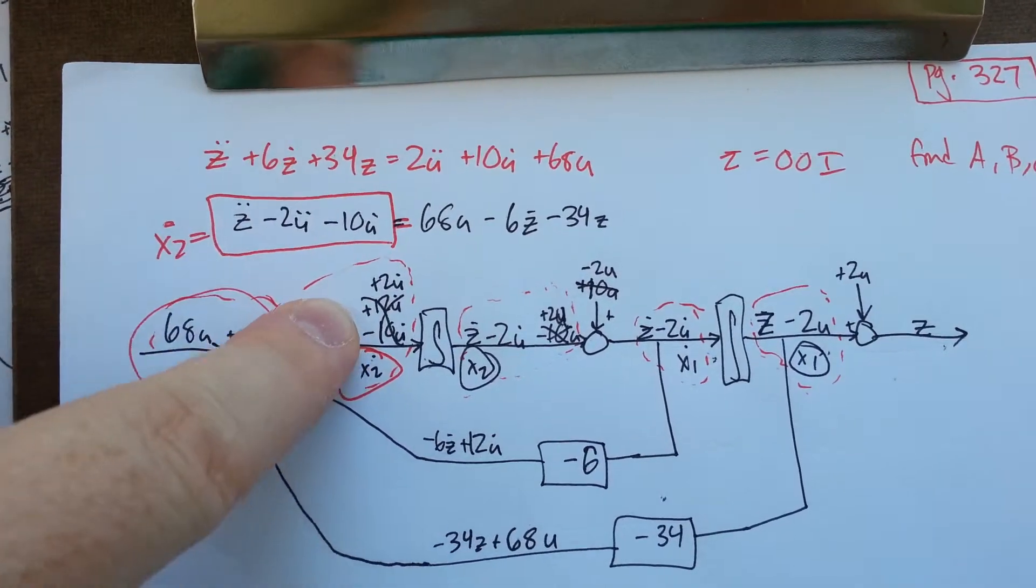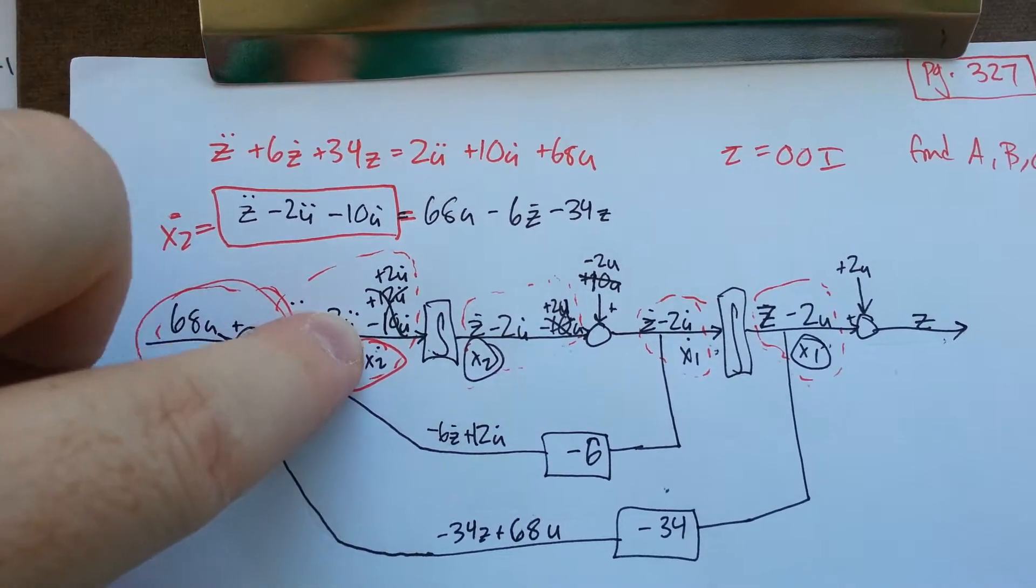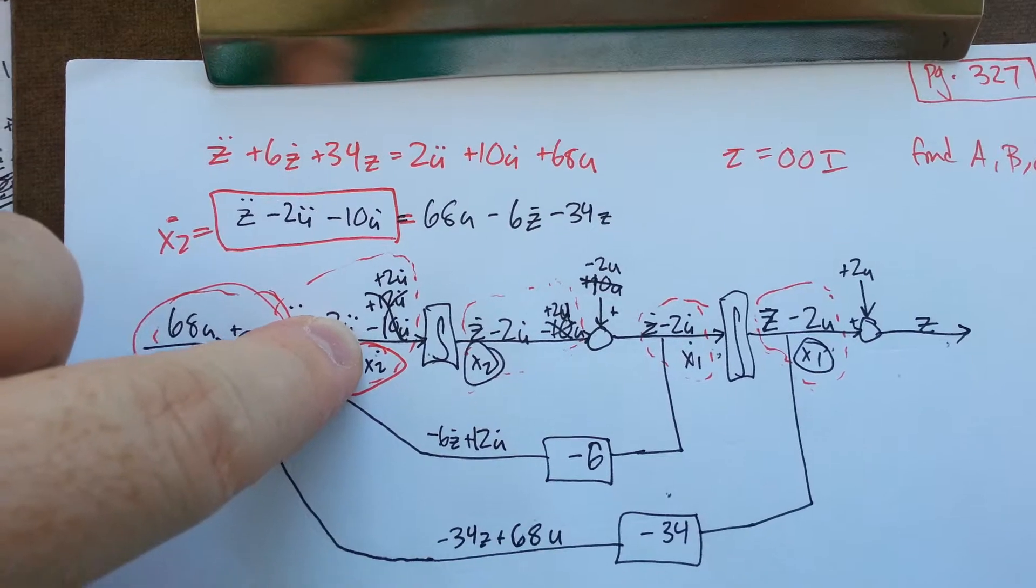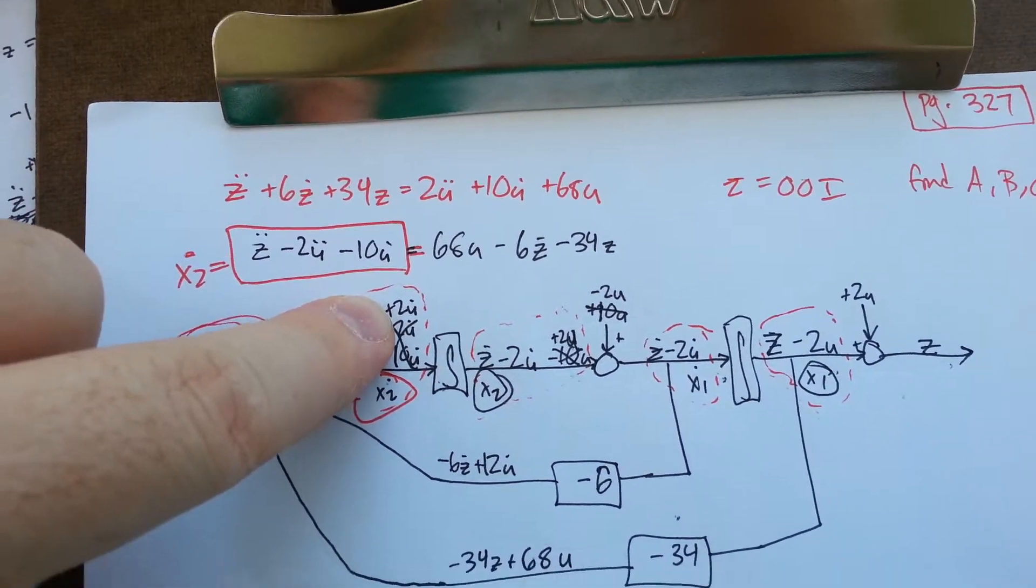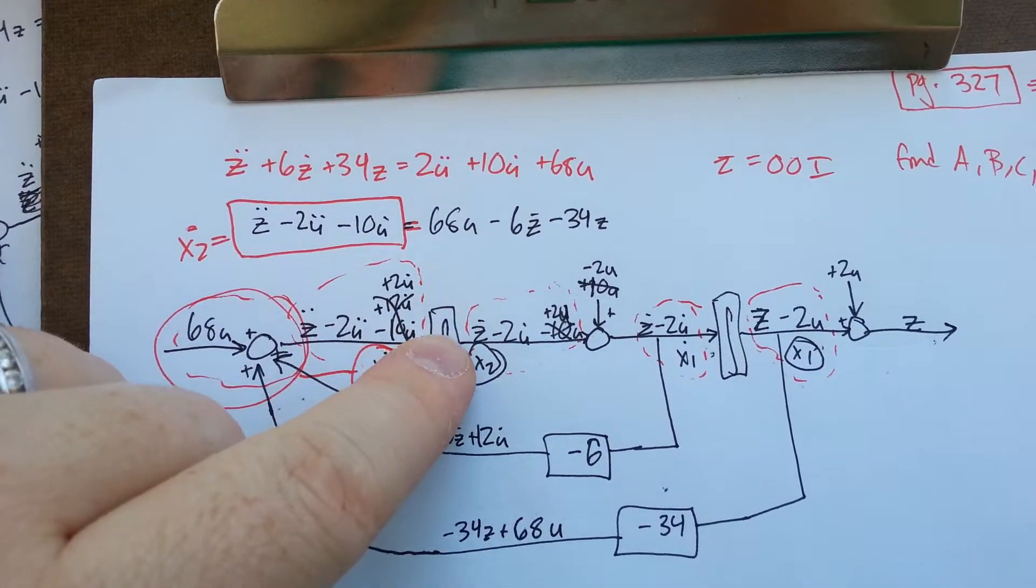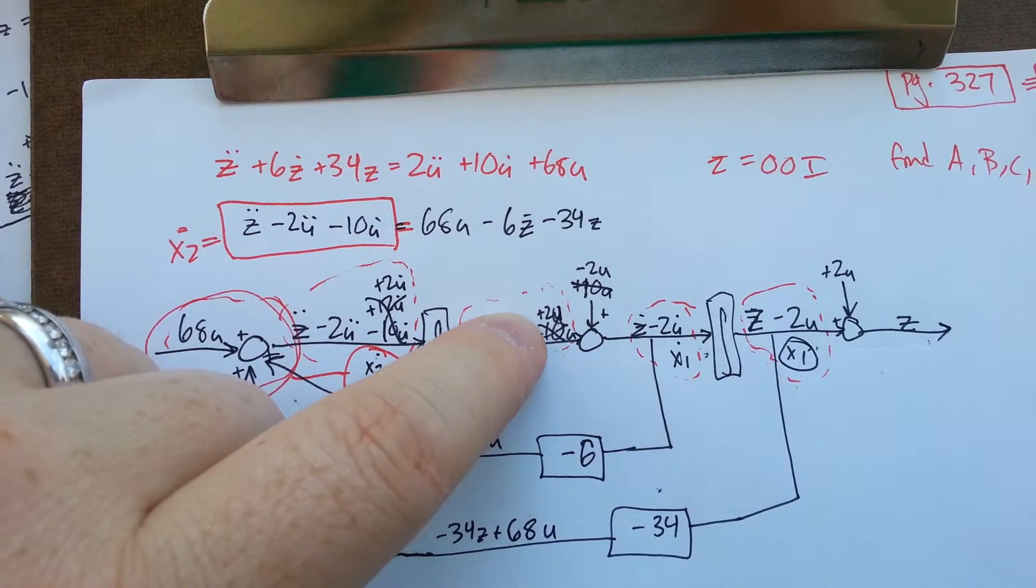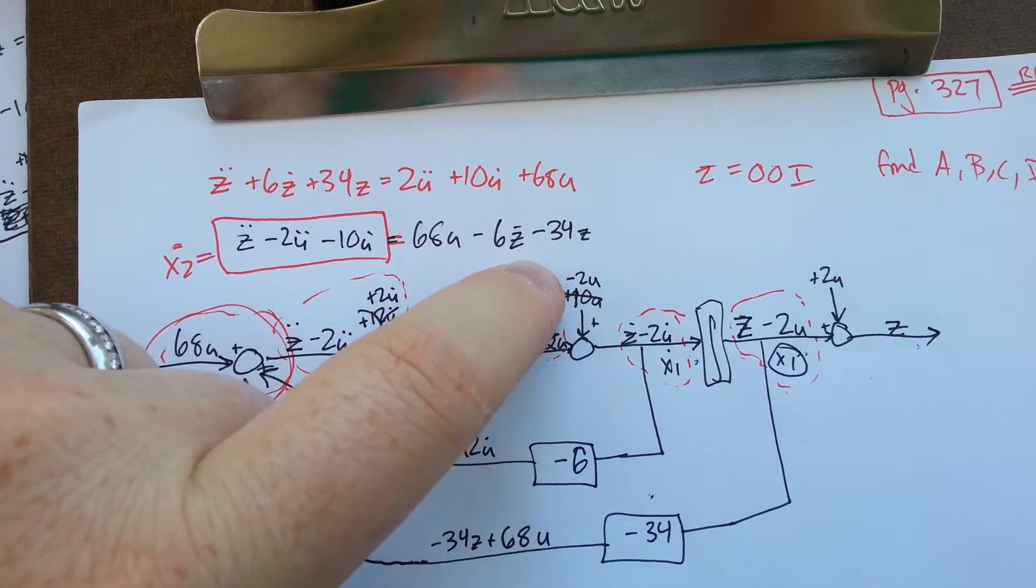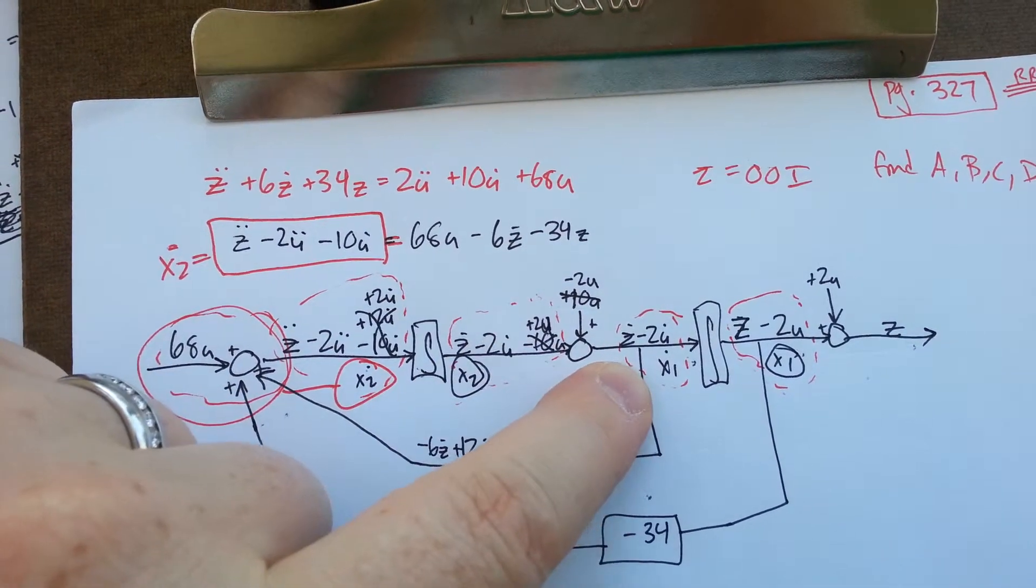Now I've got that plus 12u dot minus 10u dot from the original equation. Sum them together, I'm left with 2u dot. After that goes through the integral, now I've got a plus 2u and my summer changes to negative 2u to cancel it out and now I'm back to normal.